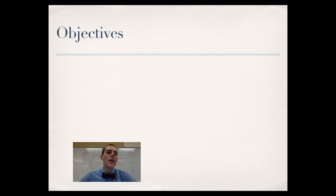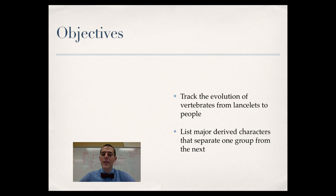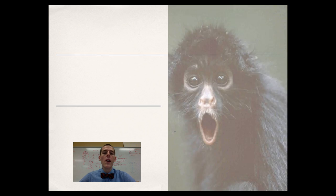By the end of the video, here are the things that I need you to know or be able to do: track the evolution of vertebrates from lancelets to people, and list major derived characters that separate one group from the next. So without further ado, let's jump in and start trekking through some of this material.